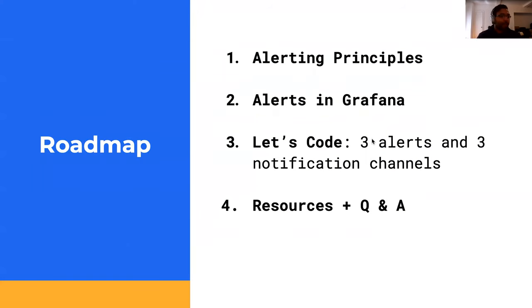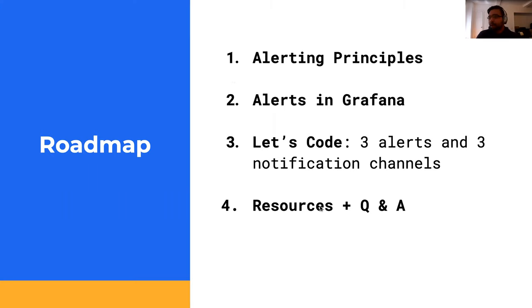Today's session is going to have four parts. First, we'll look at alerting principles - what you want to alert on - giving everyone a basic understanding of alerts. Second, how alerts specifically function in Grafana. Third, the bulk of the session is the 'let's code' portion, where we'll use a scenario of monitoring a production database, defining alerts for uptime, memory consumption, and disk usage, and setting up notification channels like Slack, Opsgenie, and PagerDuty. Then in part four, I'll leave you with resources and answer your questions.